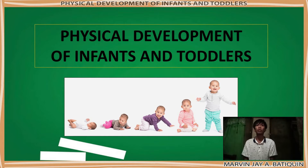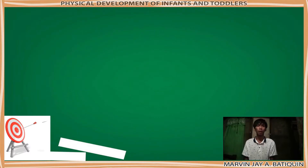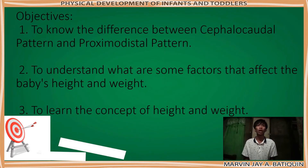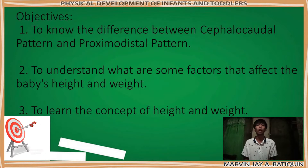There are major principles of human development: the cephalocaudal pattern and the proximodistal pattern. Before that, let me state the objectives of this topic. First, to know the difference between the cephalocaudal pattern and the proximodistal pattern. Second, what are some factors that affect the baby's height and weight. And lastly, to learn the concept of height and weight.